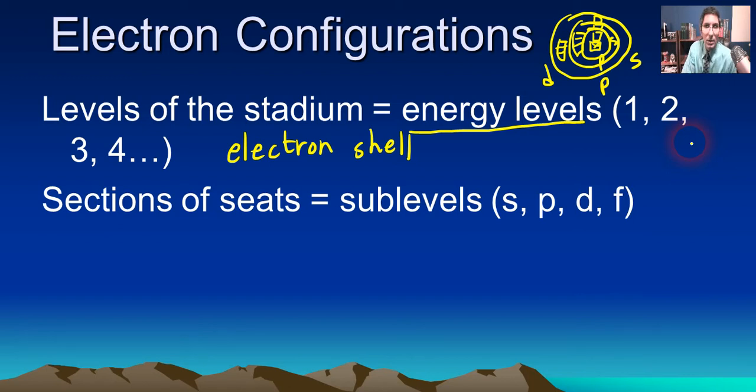Every one of those sections is what we call in science or in chemistry or in physics a sublevel. And so in science we talk about, for example, the 1S sublevel or the 3D sublevel. Sometimes they're called sub-shells. That's the same thing when we say sub-shell or sublevel.